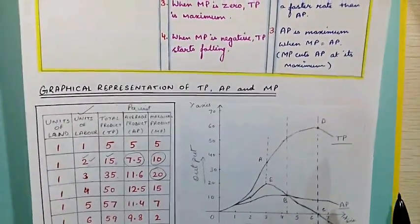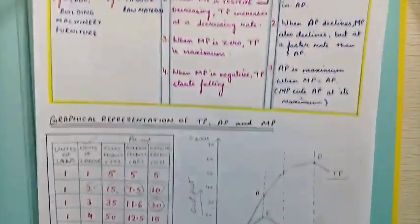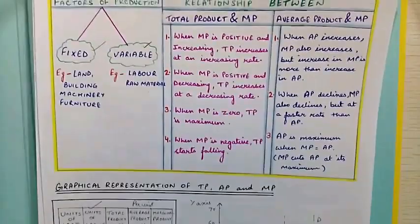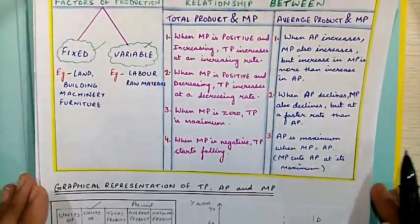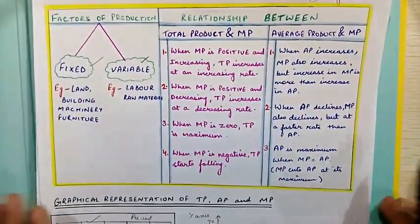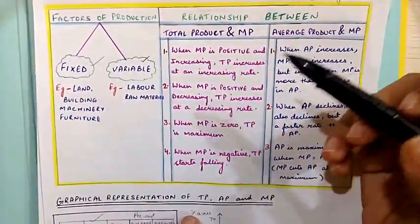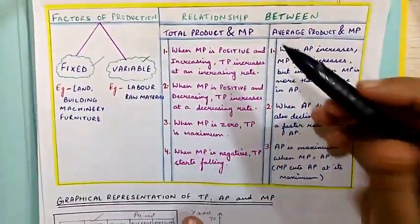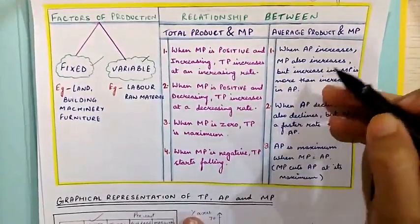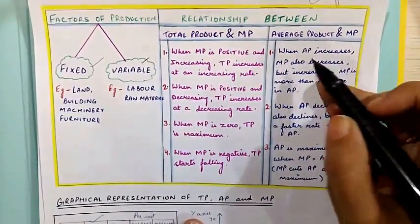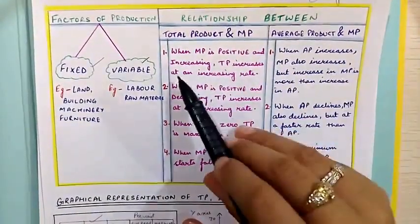Now we will look at the relationship between TP, AP and MP. TP is total product, AP is average product, and MP is marginal product.